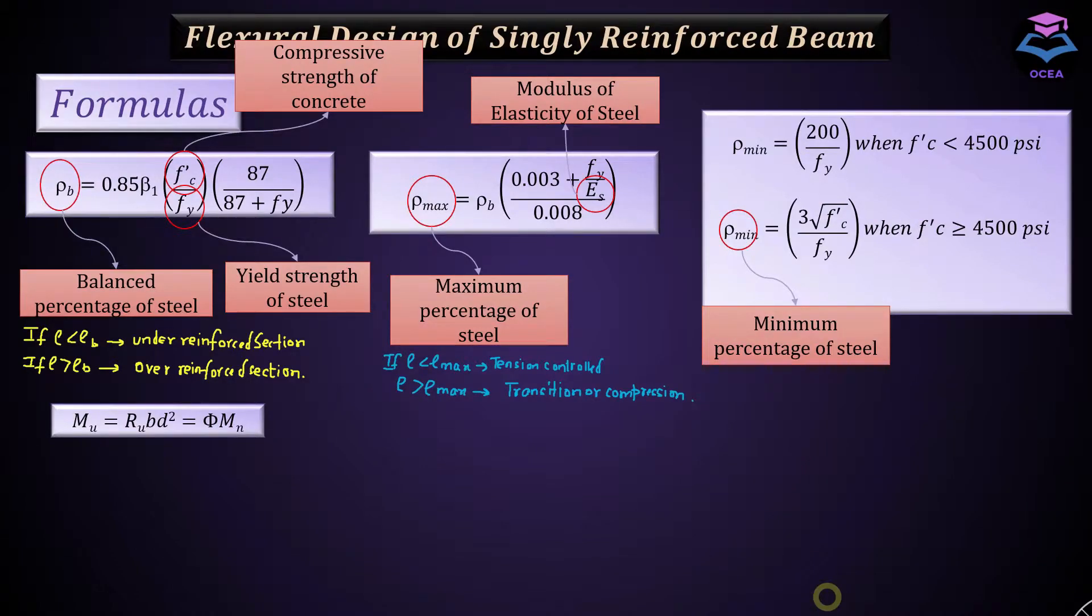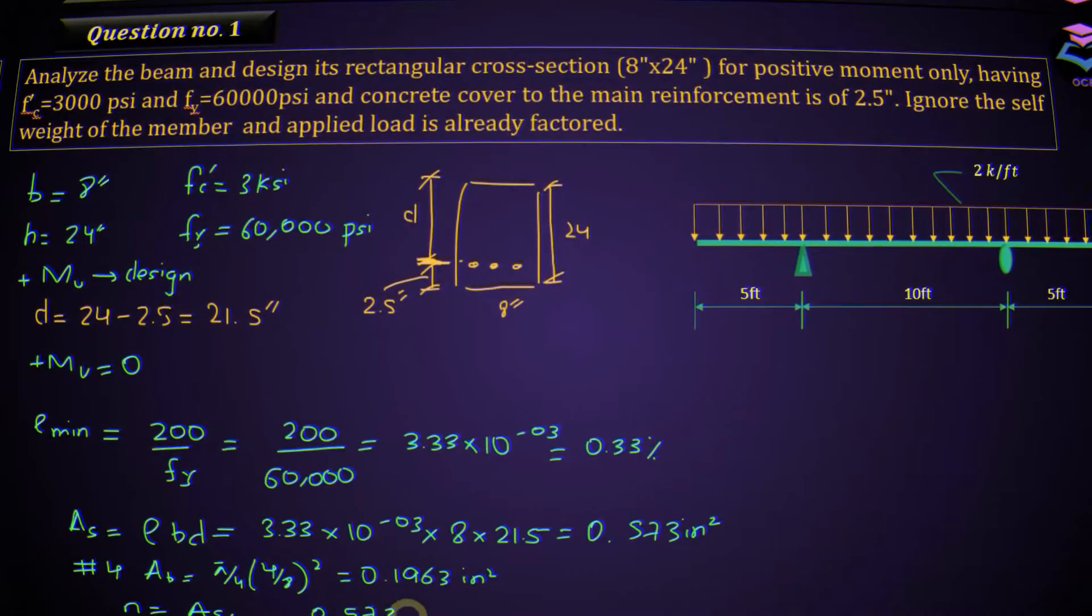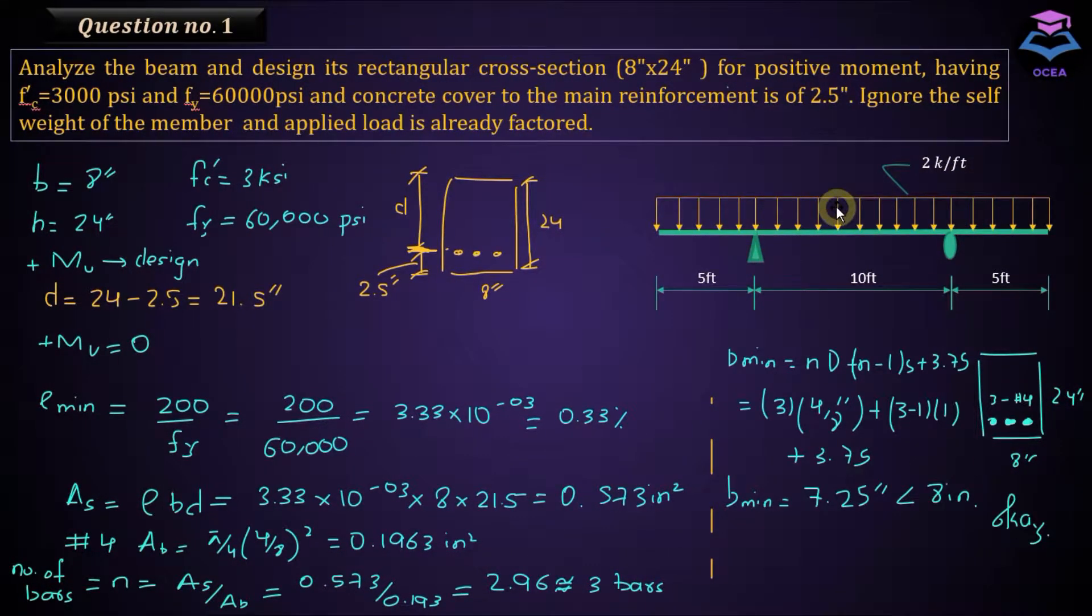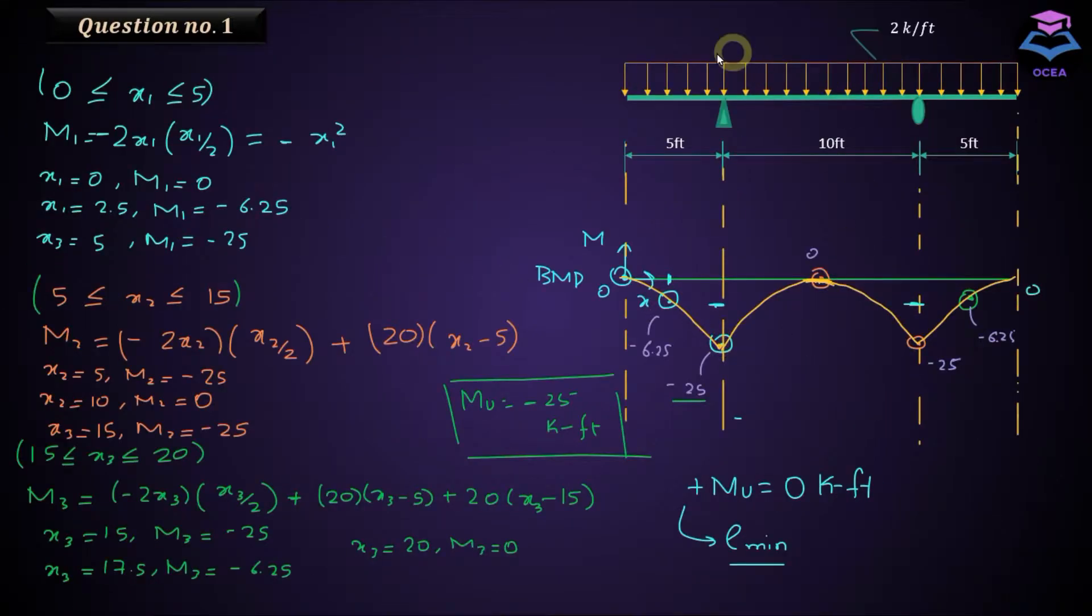Hey everyone, it's Kabir Bhutto here. In the previous lecture I went through the designing process and solved one question related to flexural design of beam. We designed this beam for positive moment Mu, and the positive moment Mu in this case for this loading configuration was equal to zero kip fin. In this video we will design the beam for a negative moment, and the maximum negative moment occurs at support which is equal to 25 kip fin.